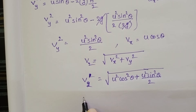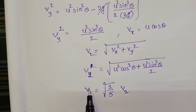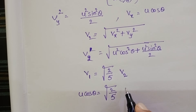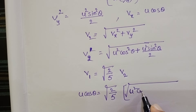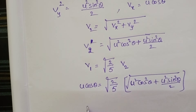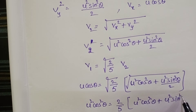Now applying the given condition: velocity at maximum height equals square root of 2 by 5 times the velocity at half of the maximum height. Substituting v1 = u cos theta and v2 = sqrt(u² cos²θ + u² sin²θ / 2), and squaring both sides: u² cos²θ = (2/5) × (u² cos²θ + u² sin²θ / 2).